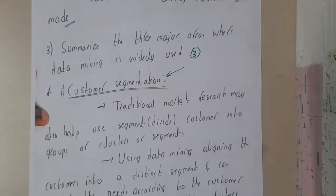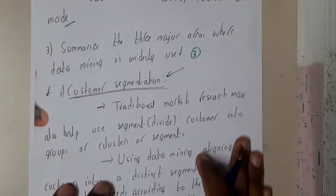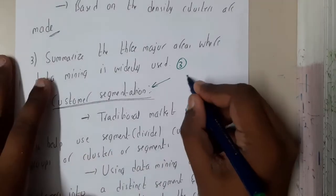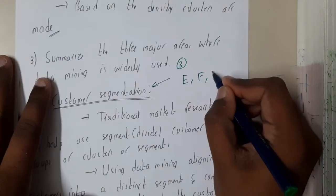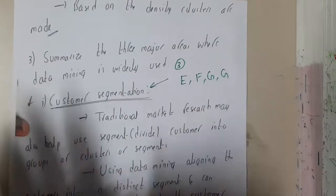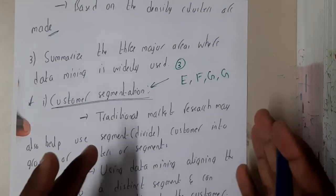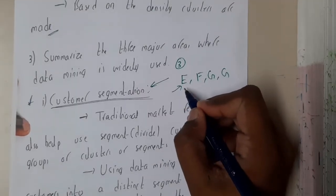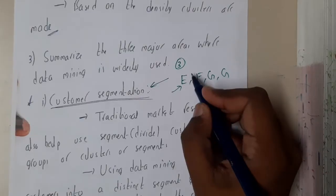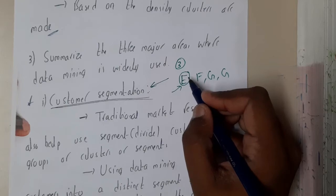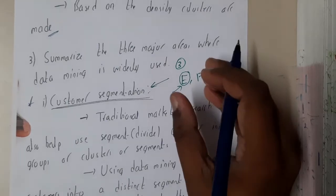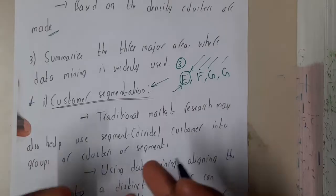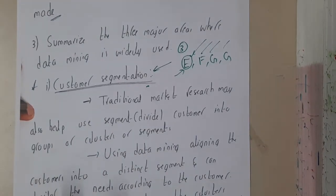Assume you are running a huge shopping mall where you sell everything — electronics, furniture, mobile phones, gadgets, groceries. You'll have a lot of customers. Now if you have a sale for electronics, do you want to send notifications to everyone, or only to the target audience for electronics? It's better to send only to the target audience — your budget will also be safer. This segmentation of customers based on their behavior or activities is called customer segmentation.